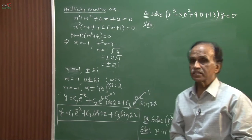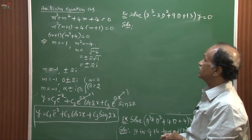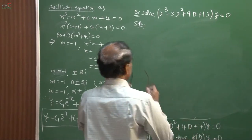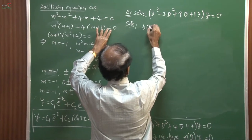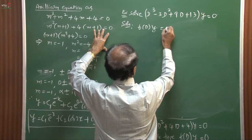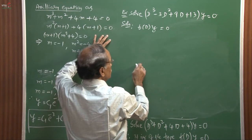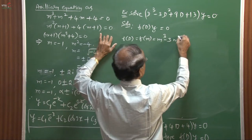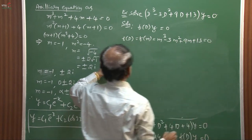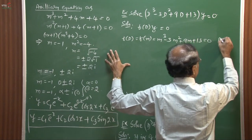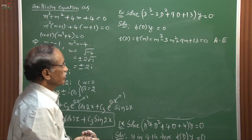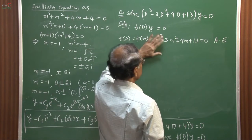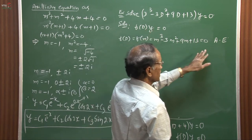With the trial and verification method, we find what value of m satisfies the equation. That value becomes one root; then we divide by that factor to find the remaining factor. The auxiliary equation is f(m) = m³ − 3m² + 9m + 13 = 0. Trying m = 0 gives f(0) = 13 ≠ 0. Trying m = 1 gives 1 − 3 + 9 + 13 ≠ 0.